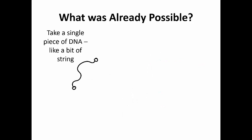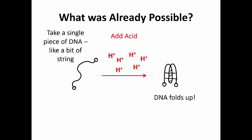So what was already possible? We already knew that if you take a small fragment of DNA which has a particular sequence or code, you can change the conditions to make it do different things. So let's say this piece of DNA is at neutral pH. If we add acid, the DNA folds up into a tightly packed four-stranded structure called an i-motif. Depending on how much acid you add, this can happen in less than a second.